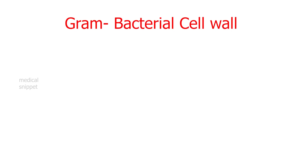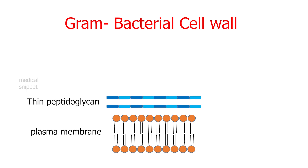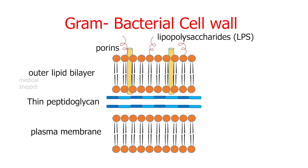Gram-negative bacterial cell walls also consist of a plasma membrane, but the peptidoglycan layer is very thin. In addition to the plasma membrane, there is another outer lipid bilayer. It contains porins and lipopolysaccharides; lipopolysaccharides are specific to gram-negative bacteria and are also known as endotoxins. As gram-negative bacteria have an outer membrane and a thin peptidoglycan layer with few cross-linkings, they are less susceptible to beta-lactam antibiotics.